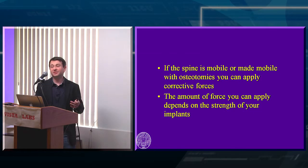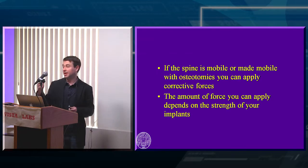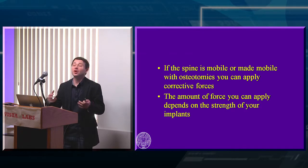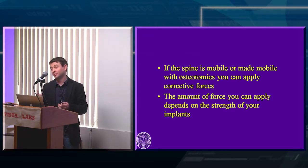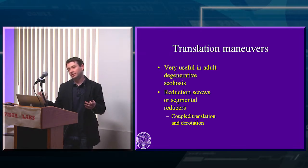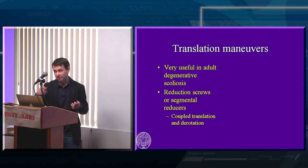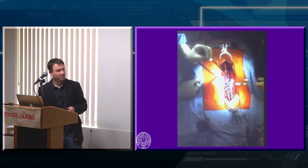If the spine is mobile — like in an adolescent idiopathic case — you don't need to do much: a Schwab grade 1 osteotomy, a little facet release, some screws, compression and distraction, rotation. It works really well. The stiffer the spine, the more you have to work to get it mobile and the harder you pull on implants. Your limiting force is sometimes the fixation quality and sometimes the patient's bone quality. Among the corrective forces, I use translation maneuvers a lot in adult degenerative lumbar scoliosis — I've moved to a coupled translation-derotation technique as technology has evolved with segmental reducers.